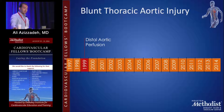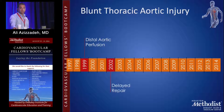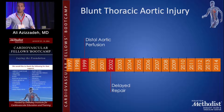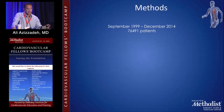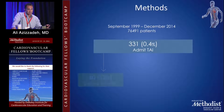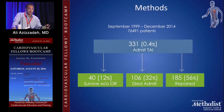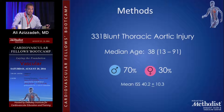We started distal aortic perfusion in 1999 for open repairs. The first TEVAR was approved in 2005 — before that, some people were using aortic cuffs, but the treatment length was only 56 centimeters, so you couldn't always reach the thoracic aorta. Our series of 331 patients: 12 survived without an operation — usually grade ones — 32 died on admission, showing this is a very bad diagnosis. There were 185 repairs, 56% of patients, with a mean age of 38 and 70% male. Mean injury severity score was 40.